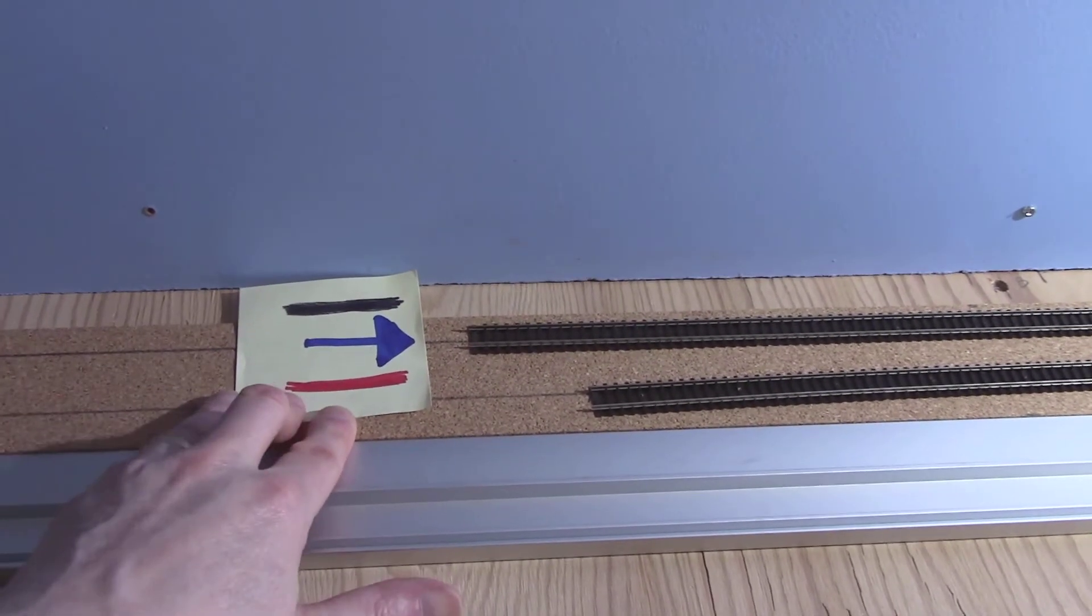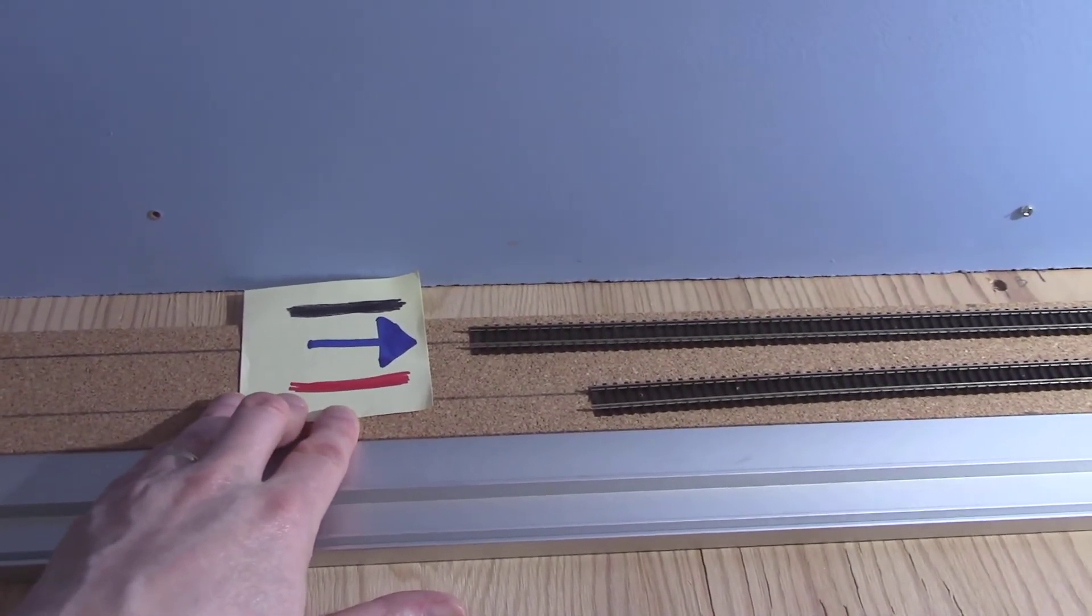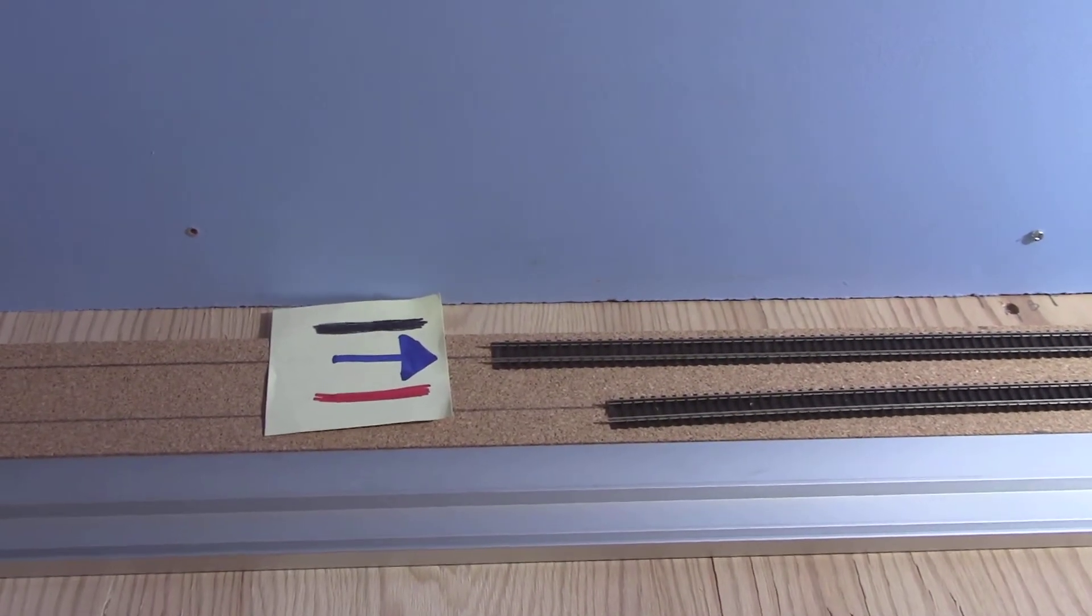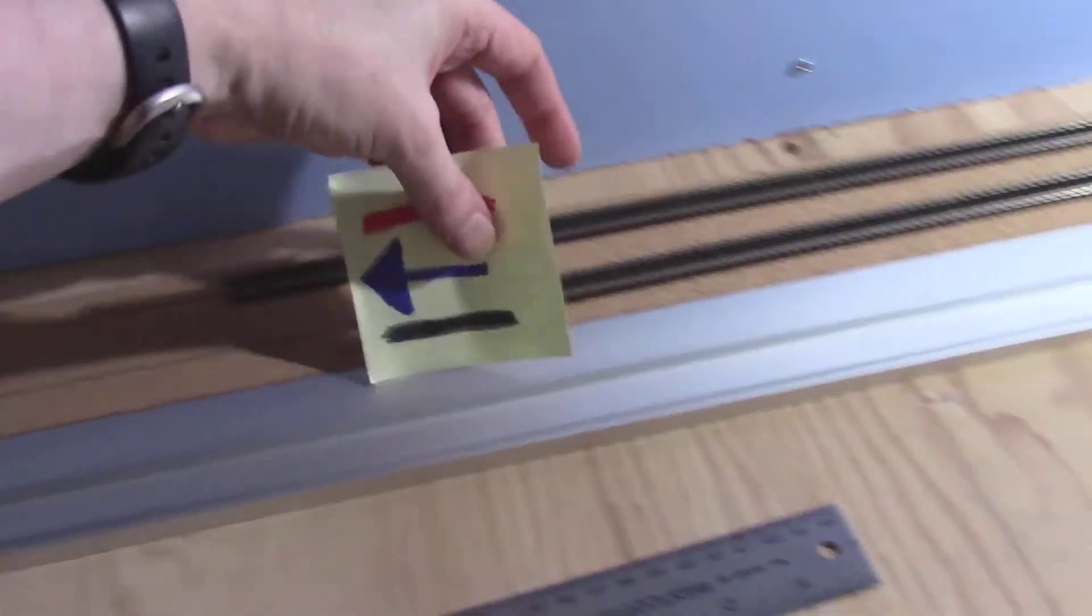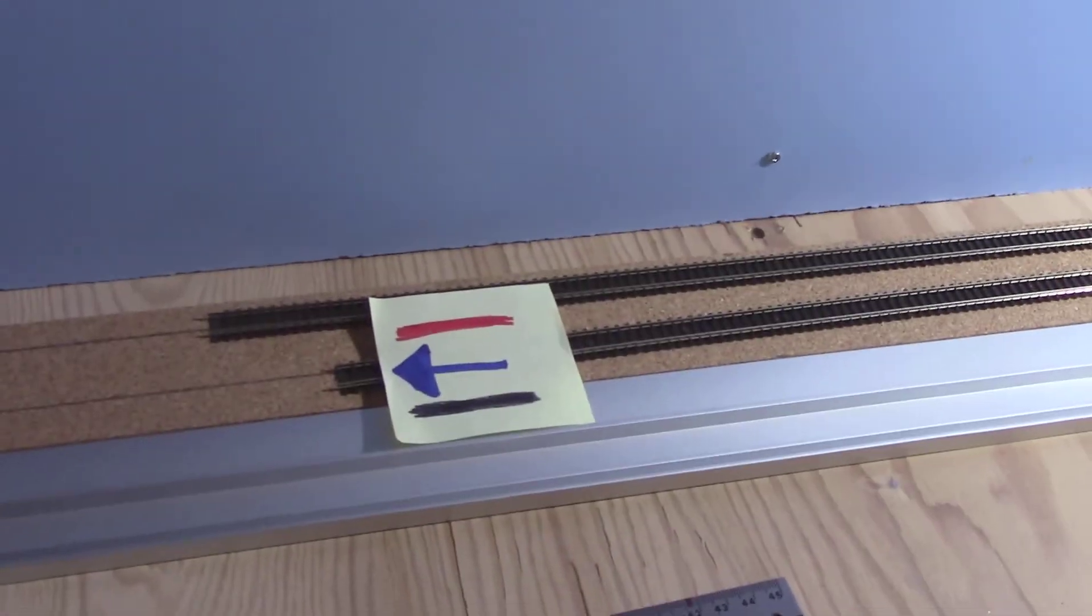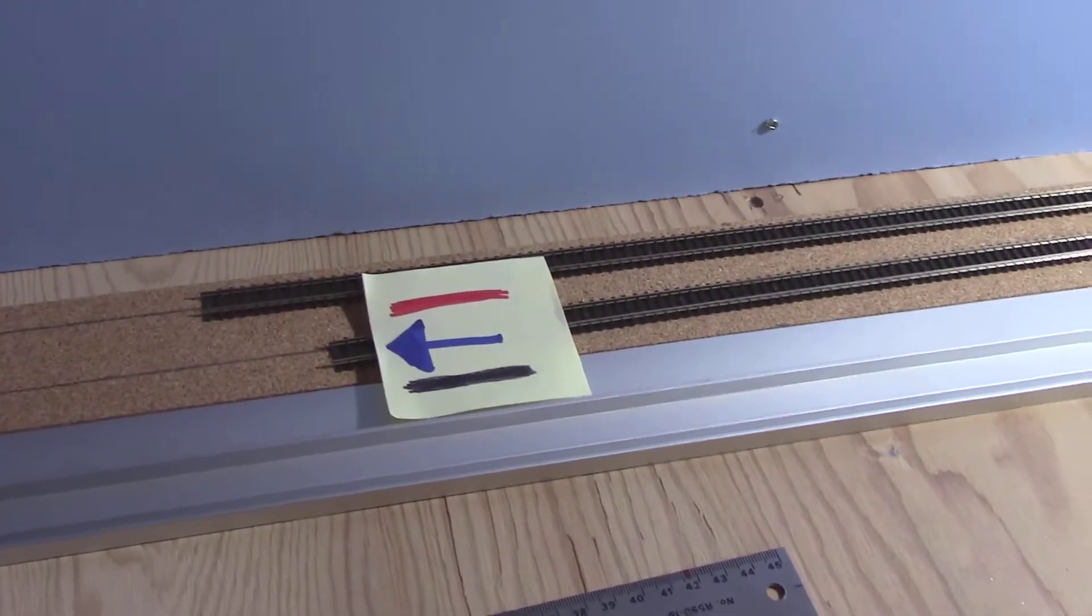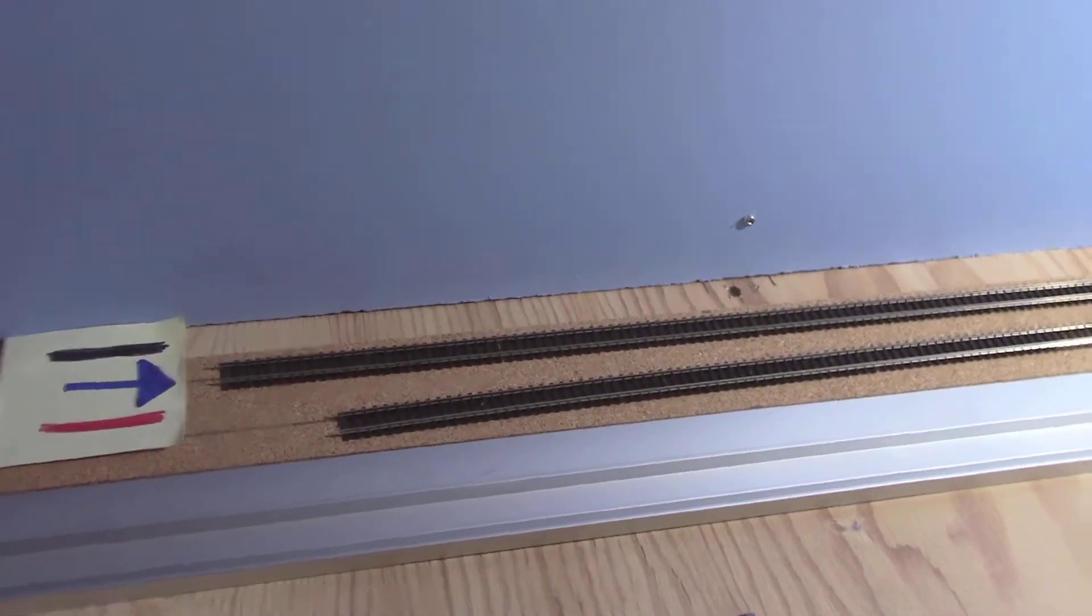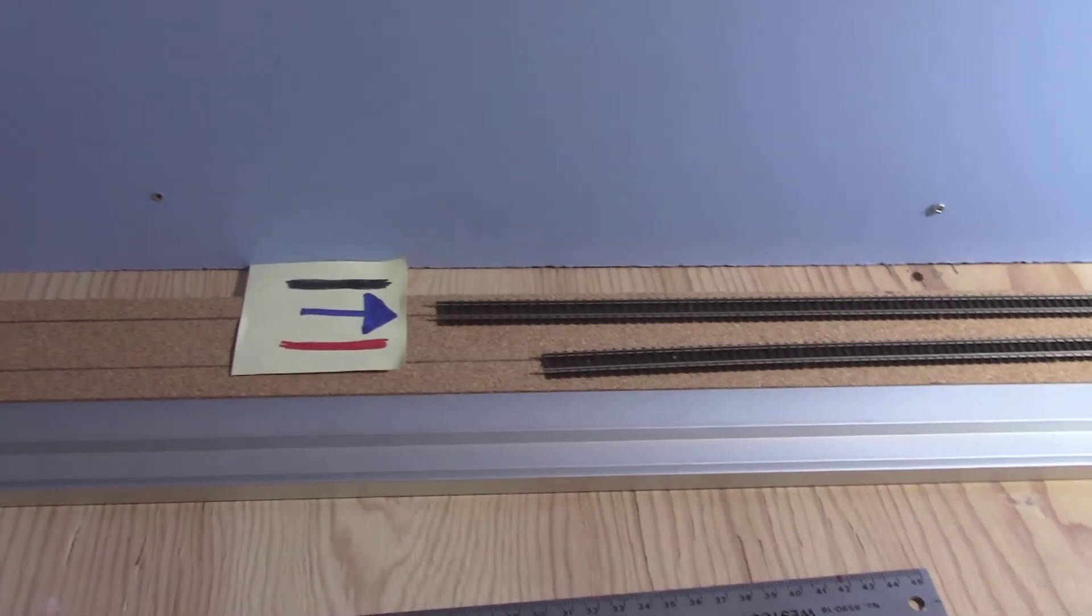And I'm making use as I mentioned in a previous video of which way that the direction of travel's going and then which way my drops are to connect up to my bus line, so keeping that bound and that balance right is my highest priority because I definitely don't want to generate a short and have to pull track up to sort it out later.